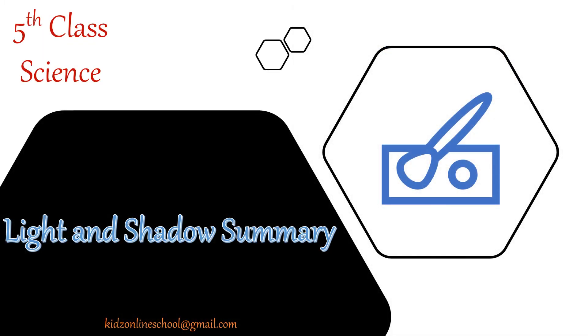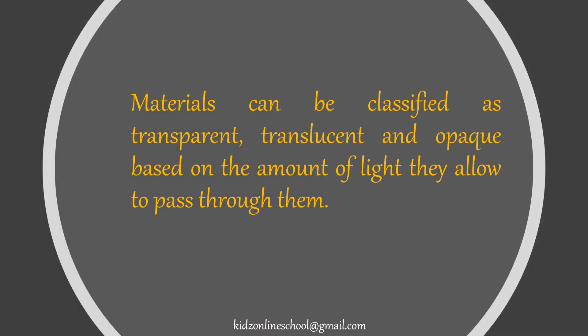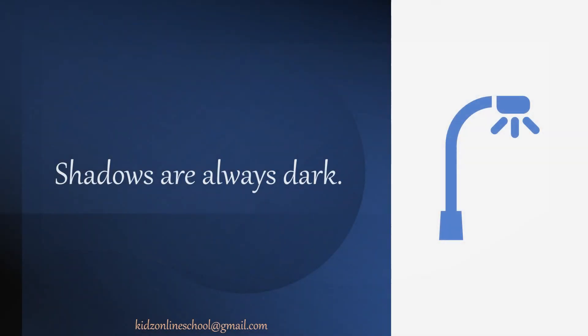Light and Shadow summary: Materials can be classified as transparent, translucent, and opaque based on the amount of light they allow to pass through them. Only opaque and translucent objects form shadows. Shadows are always dark.